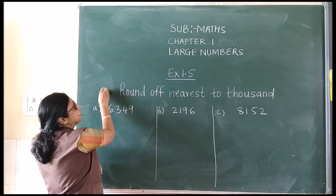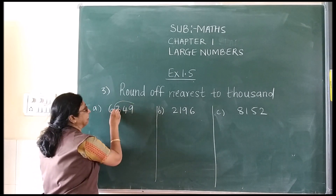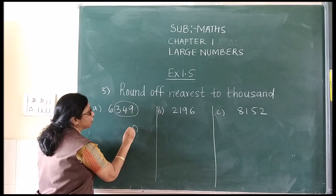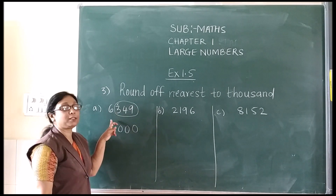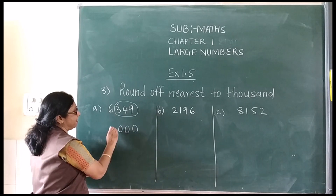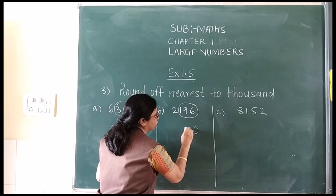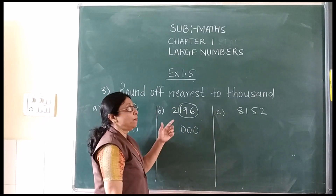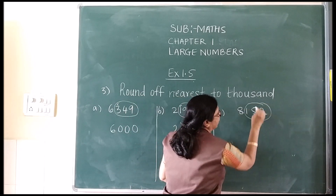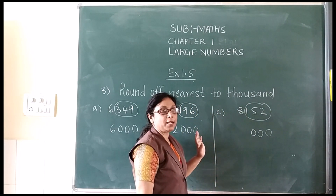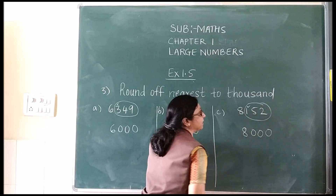Now we will see round off nearest to 1000. 1000 has how many zeros? 3 zeros. So you will circle 3 numbers from right to left and place 3 zeros below, because 1000 has 3 zeros. Then see the first number in the circled digit — it is less than 5, so outside number stays as it is. Same for the second sum: circle 3, place 3 zeros. The first number in the circle is 1, less than 5, so outside number stays as it is. Third sum also: 3 zeros, 3 numbers circled. First number in the circle is 1, less than 5, so outside digit stays as it is.